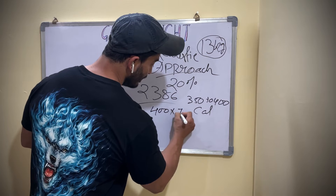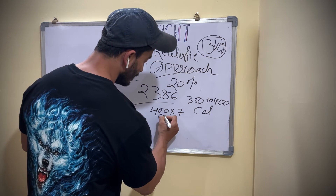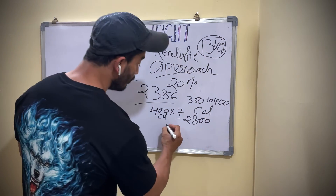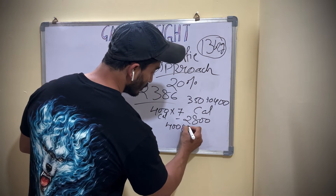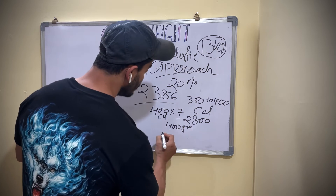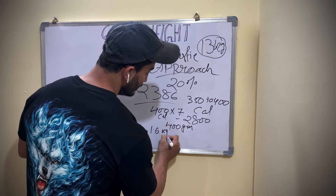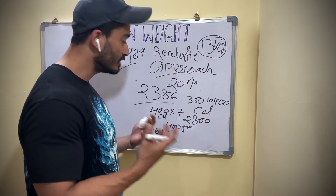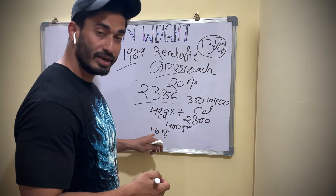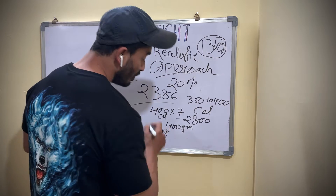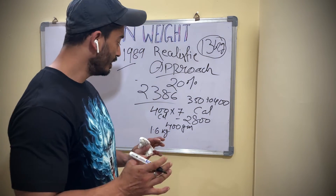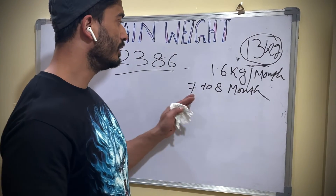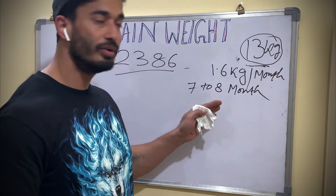Adding 400 calories times 7 days a week gives 2800 calories, meaning we will gain approximately 400 grams per week. In a month, that is around 1.6 kg. I know it seems very less, but for those who are doing this naturally without medicine and building muscle, this is enough. We can gain 1.6 kg per month easily with normal exercise and this level of diet, achieving the 13 kg goal in about 7 to 8 months.